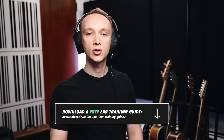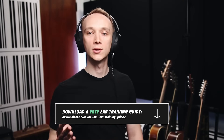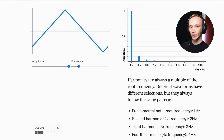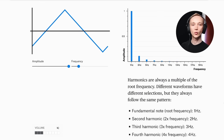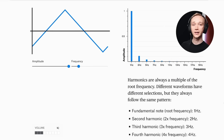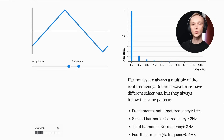But before we get there, I want to show you a few types of waveforms that highlight the relationship between wave shape and harmonic content. Let's start with a triangle wave. A triangle wave consists of only odd order harmonics. In this case, we see a triangle wave with a fundamental frequency of 1Hz on the graph, and on the frequency graph we see that this wave also contains odd order harmonics like 3Hz, 5Hz, 7Hz, 9Hz, and so on. The relative level of each harmonic frequency decreases the further you go from the fundamental.